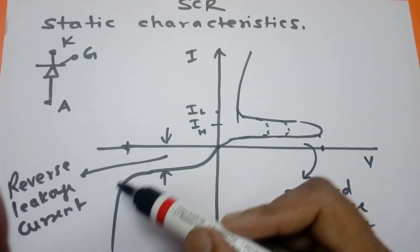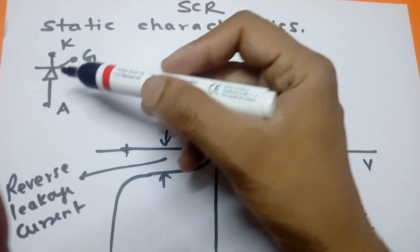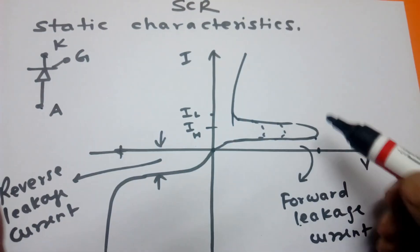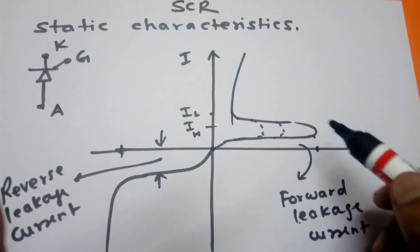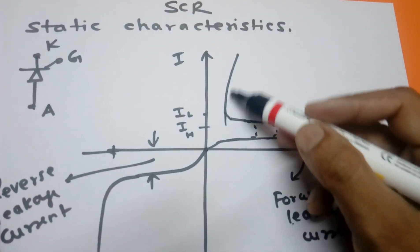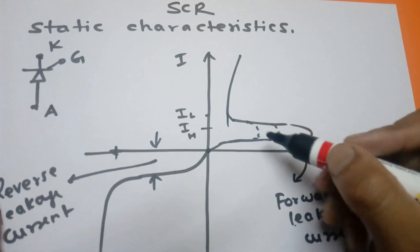Now we will see when we apply gate current here. Suddenly the current will start to flow and it will rise like this. This is the point where gate current increases.